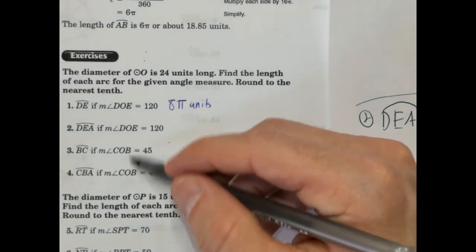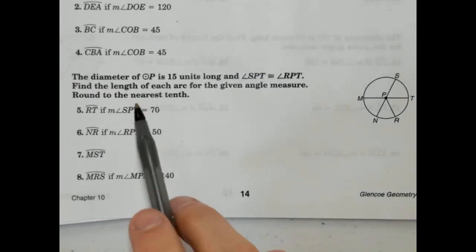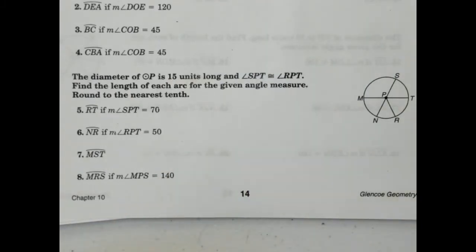So hopefully that clarifies how to do those. I don't want to do these other two. I actually want to leave some of these for you guys to do. Let's try those out. Let's try a few more down here. So we have the diameter of P is 15 units long. And SPT is congruent to RPT. So that means these two angles are congruent to one another. Find the length of each arc for the given angle measures. Round to the nearest tenth. Let me go over here. So we'll do 5 and 6.